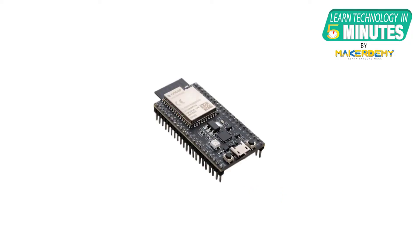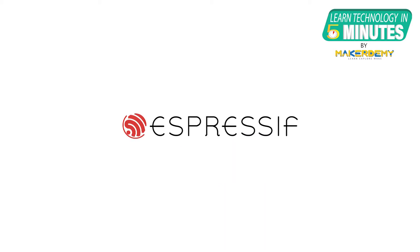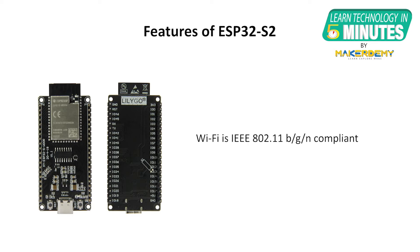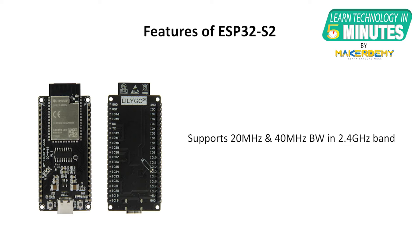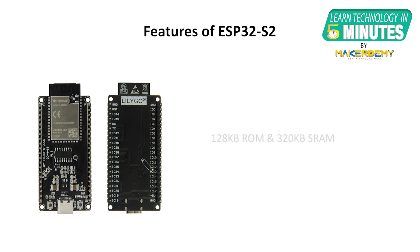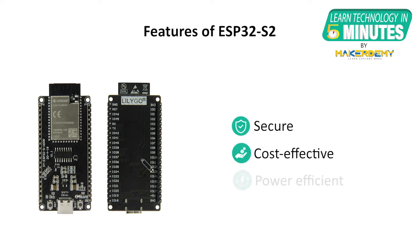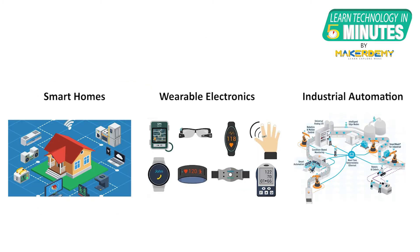Let us now begin decoding the ESP32-S2 using its data sheet. The ESP32-S2 is a low-power Wi-Fi system-on-chip microcontroller module, developed and released in September 2019 by Espressif Systems. Its Wi-Fi is IEEE 802.11 B/G/N compliant and supports 20 MHz and 40 MHz bandwidth in the 2.4 GHz band. It uses a single-core 32-bit Xtensa microprocessor with 128 KB ROM and 320 KB SRAM, and the SoC offers secure, cost-effective, and power-efficient performance.